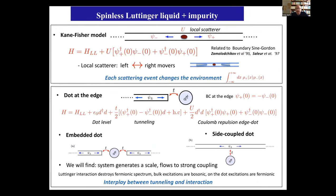Now I'll take this Luttinger liquid and put in a scatterer. This was first proposed by Kane and Fisher. You put a scatterer that takes a left mover and scatters it to a right mover, or takes a right mover and scatters it to a left mover. This is a small scatterer but it has quite dramatic effects. The reason is that taking a particle from right-moving to left-moving changes the whole interaction of the system, making this into a quantum impurity.